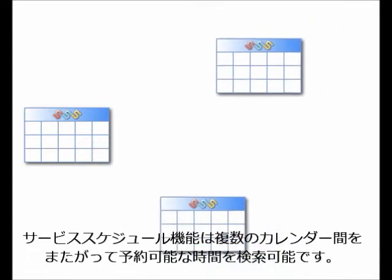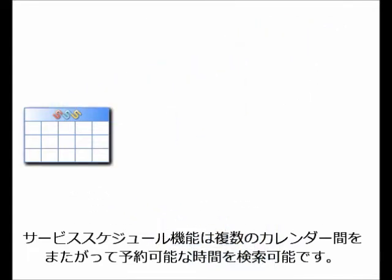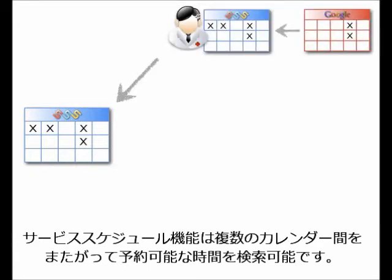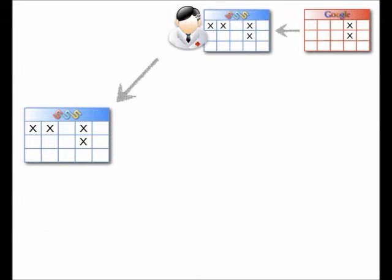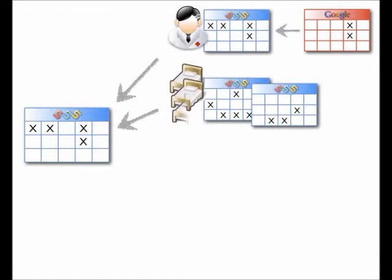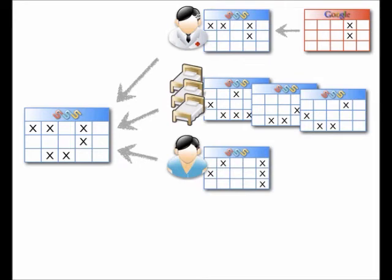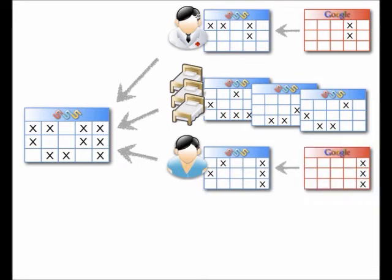A unique feature of SuperSaaS is that schedules can be combined to create advanced setups. Consider that a treatment needs the availability of a therapist, and the private calendar of the therapist needs to be taken into account. There are three treatment rooms, one of which needs to be available. In addition, an assistant needs to be available, and his personal calendar needs to be taken into account too.